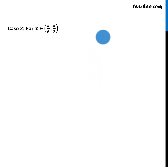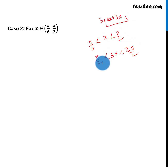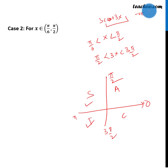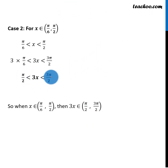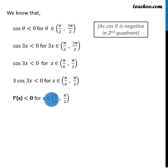Similarly, for the next interval, x is from pi by 6 to pi by 2. Multiplying by 3, the angle 3x goes from pi by 2 to 3 pi by 2. Checking cos(3x) for this range on the unit circle — from pi by 2 to 3 pi by 2, both coordinates are negative — so cos(3x) is negative, meaning f'x is less than 0 for this interval.